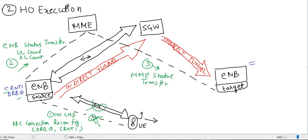MME will forward this message to target eNodeB. The name of that message is MME Status Transfer, and the content remains the same — uplink count and downlink count. This is the third message delivered.